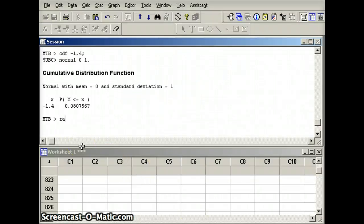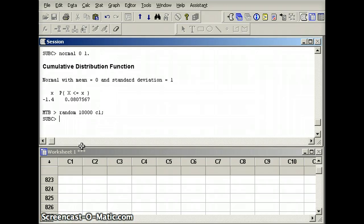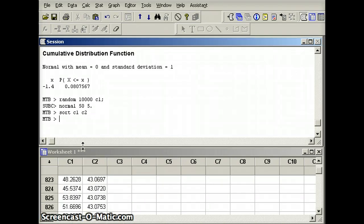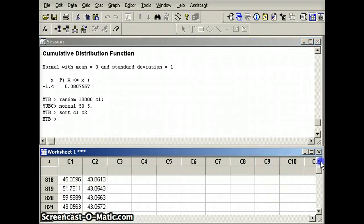So we're going to say random 10,000 C1, semicolon, normal 55, 50 space 5 - mean of 50, standard deviation of 5. Then we're going to say sort C1, C2. And we want to see how many of these numbers are less than 43. And I'm going to get there fairly soon. Less than 43 - 798.